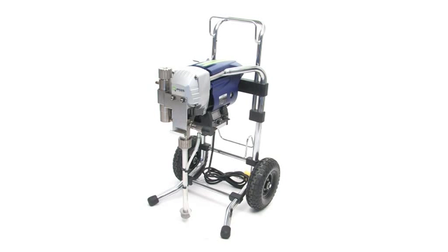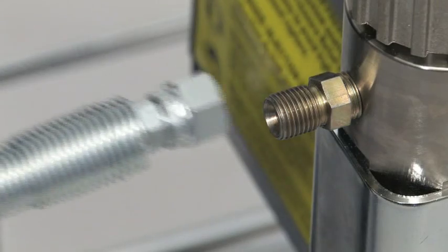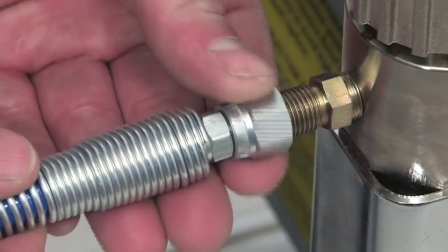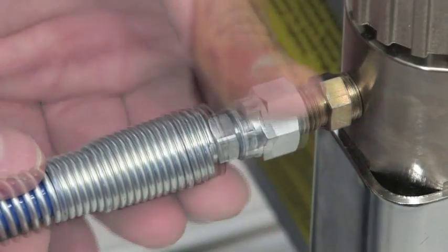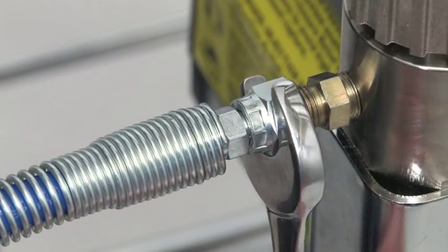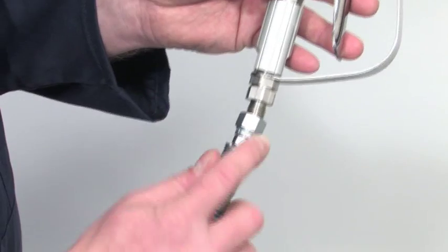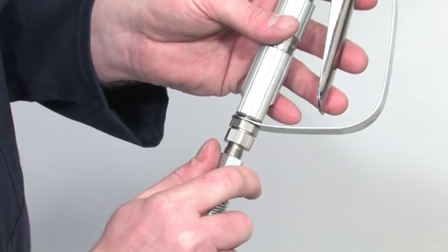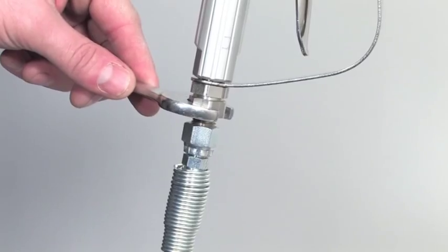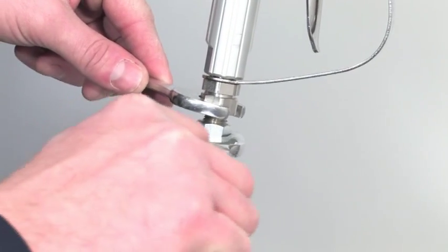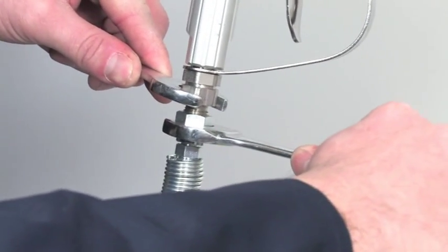Assembling your Q-TEC sprayer couldn't be simpler. It practically comes assembled as it comes out of the box. The first step is to connect the textile spray hose to the sprayer at the fluid outlet. Now connect the other end of the hose to the spray gun. You will need two 19mm open-end spanners and make sure the connections are tight.